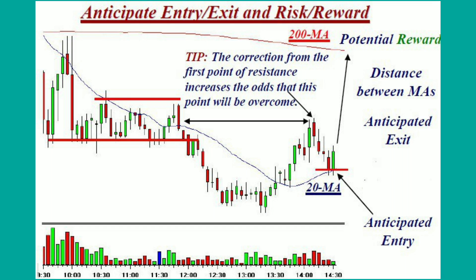These are common moving average periods. We are able to use the 20 moving average and the 50 moving average for support. For higher moving averages, we are able to target and set a risk-reward. The 200 moving average is used for the long term. We can set the entry point and risk-reward based on the 50 and 200 moving averages.